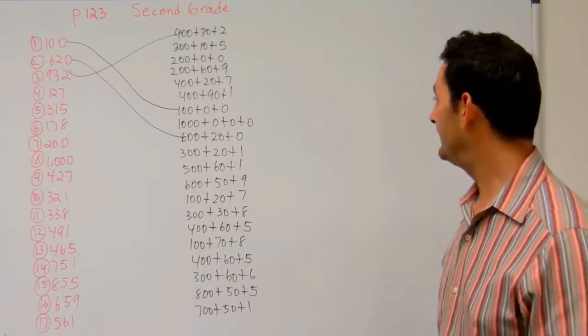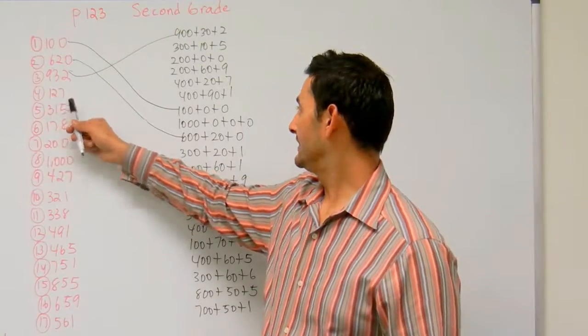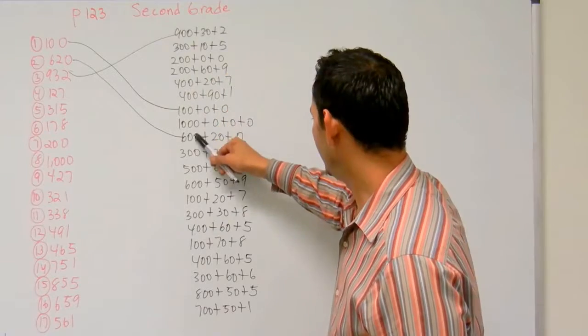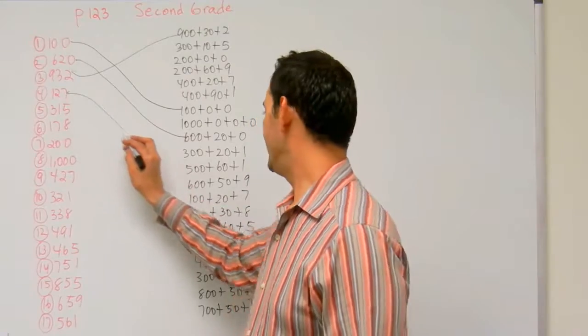Number 4, I've got 127. Let's look for 100 plus 20 plus 7. Any hundreds there? There's 100. 100 plus 20 plus 7. That's it.